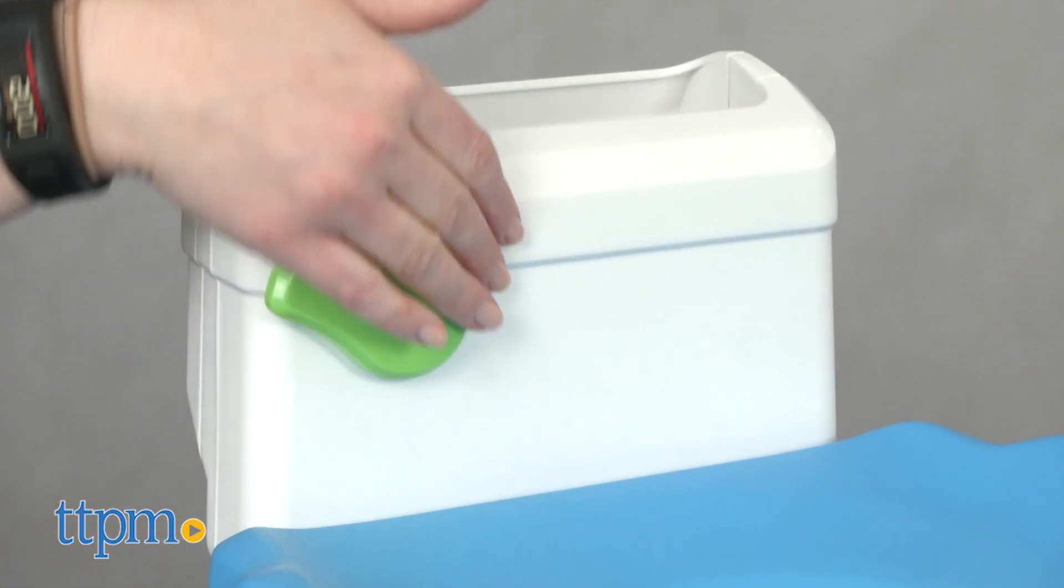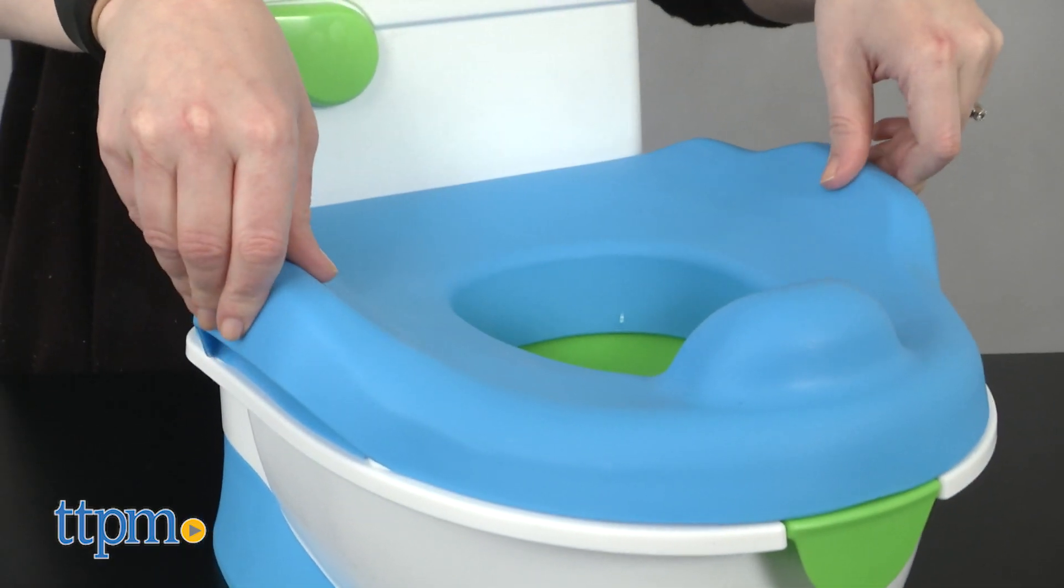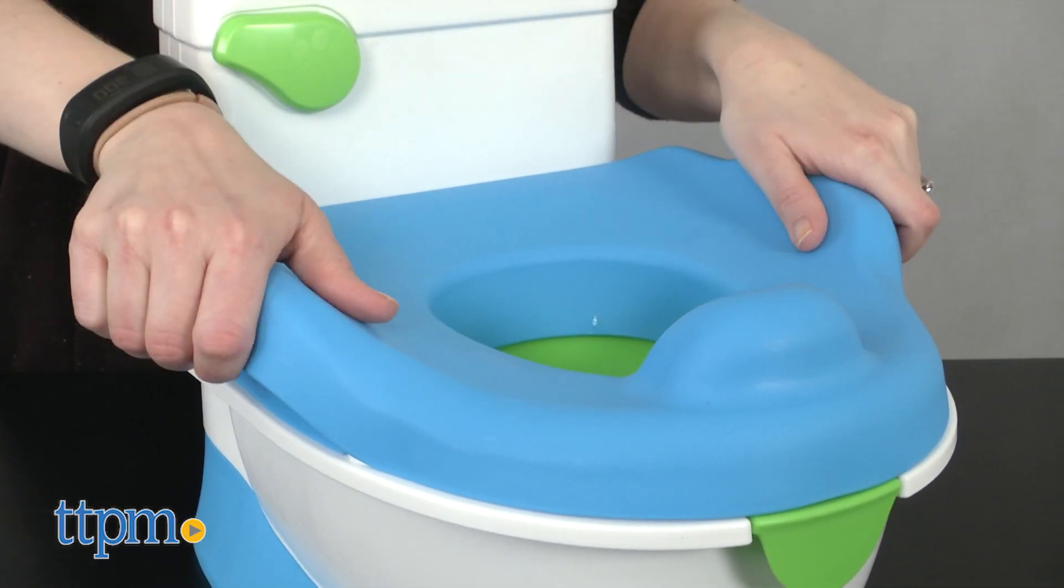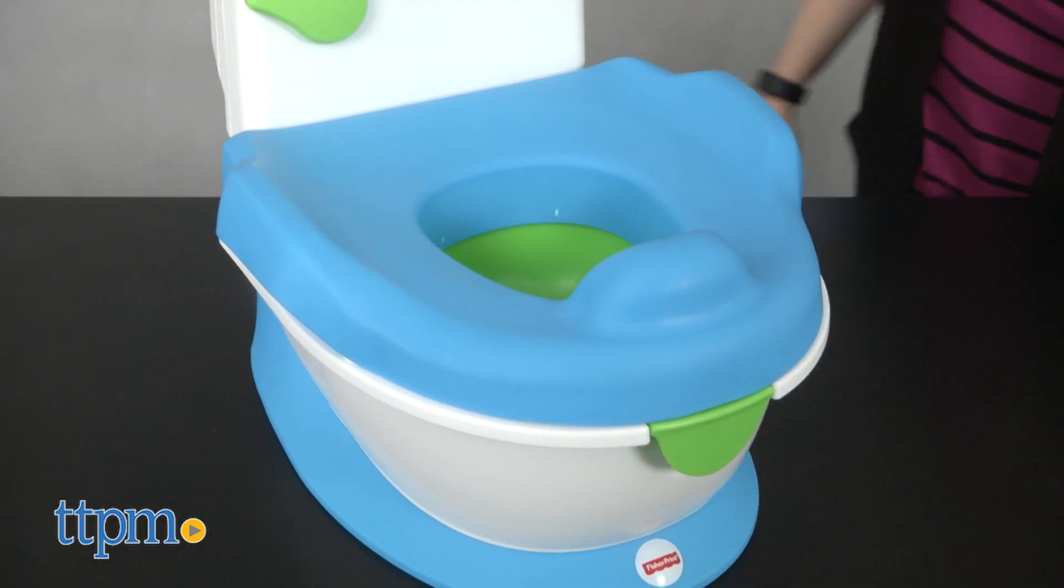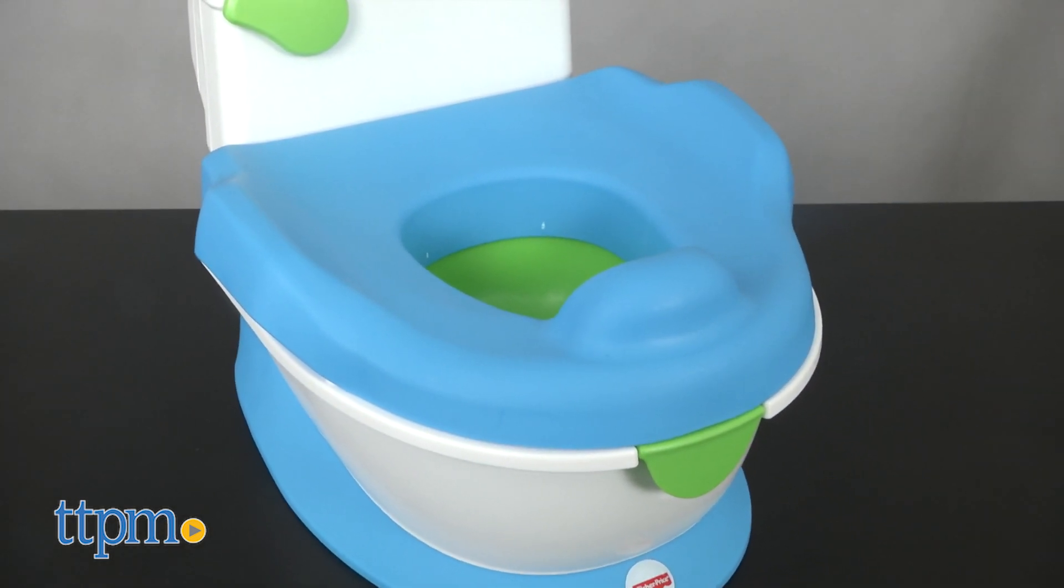The potty itself is low to the ground with a high seat back and handles on the sides to give kids comfort and security while sitting on the potty. It also has a non-skid base so that it won't slide around on your bathroom floor.